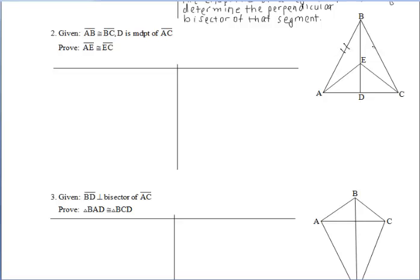Let's take a look at example two. We're given that segments AB and BC are congruent, and we're also given that D is the midpoint of segment AC. Since segments AB and BC are congruent, we can determine that point B is equidistant from the yellow endpoints A and C. And since D is the midpoint of AC, we get congruent segments DA and DC, so D is also equidistant from endpoints A and C.